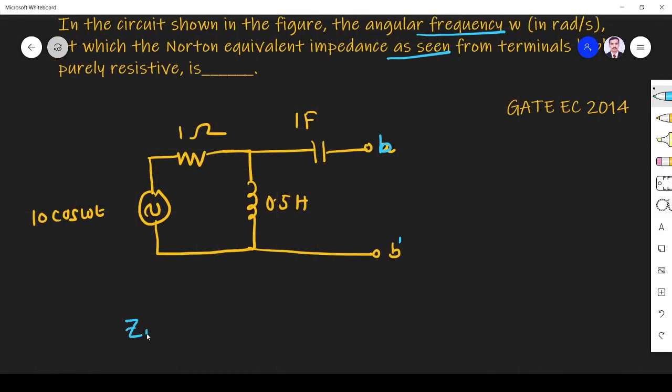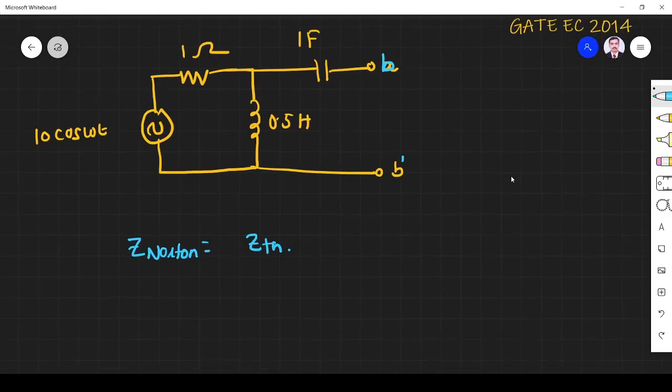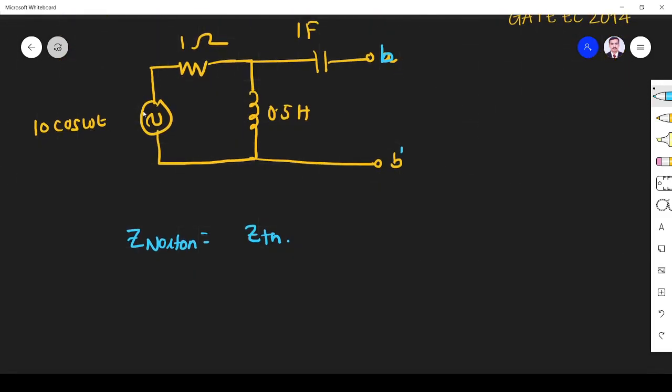...is nothing but Z_Norton. We know that Norton is equal to Z_terminal. How will we find Z_terminal? We remove the source. If you remove the voltage source, it will become short-circuit, then it will be...